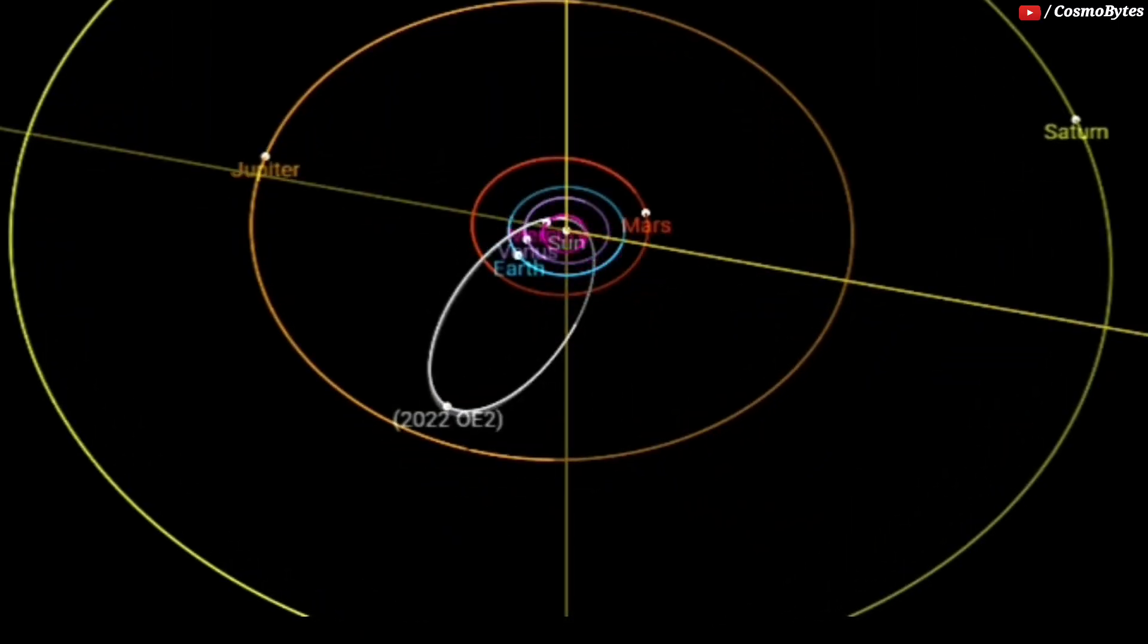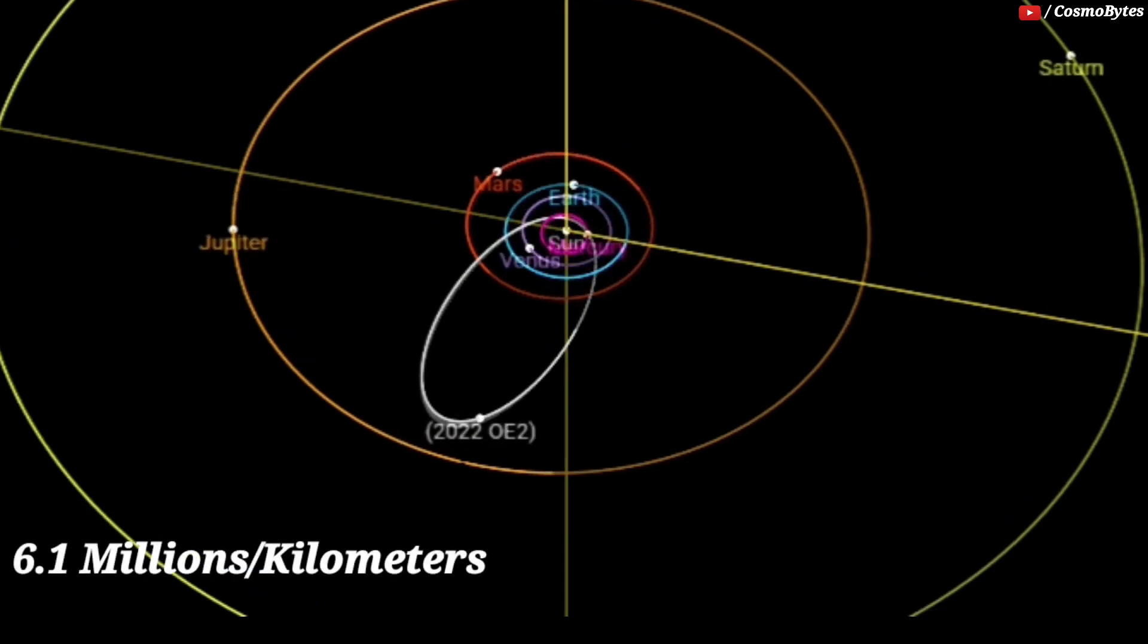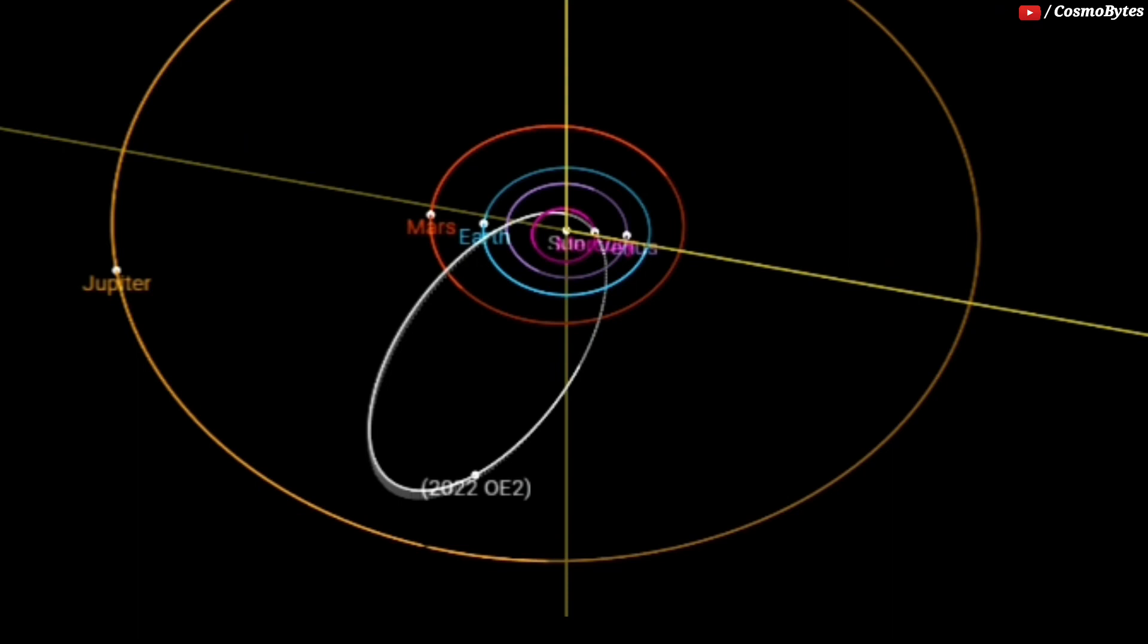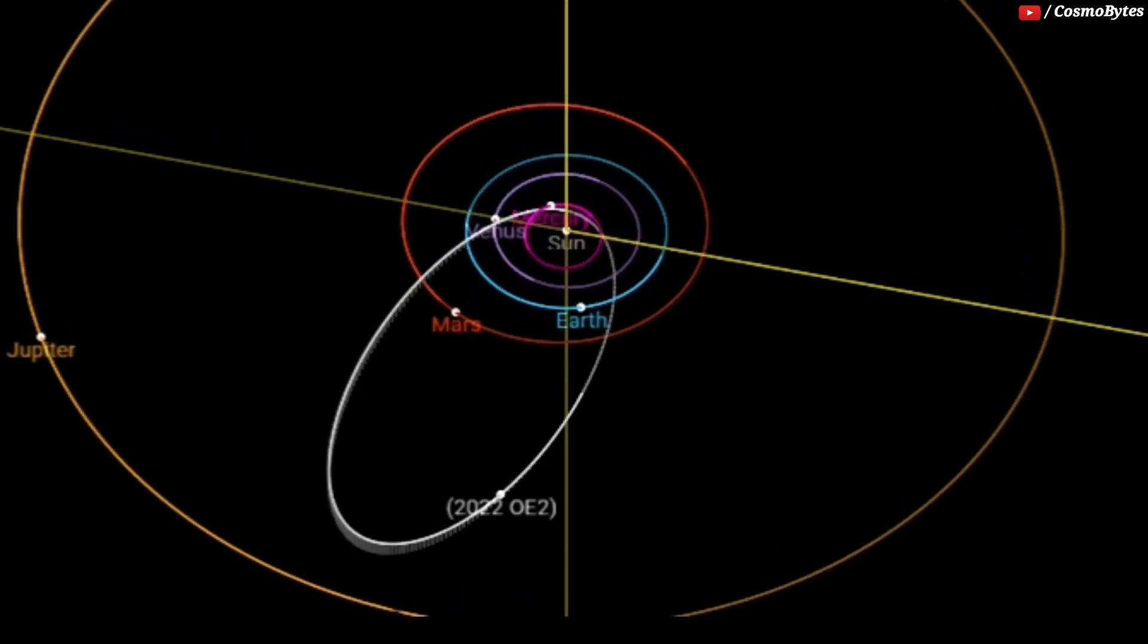At this moment, the asteroid is expected to come as close as 6.1 million kilometers to the Earth. This may seem like a large distance but in astronomical terms, it won't take the asteroid long to cover the distance if a deviation in its trajectory took place.